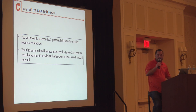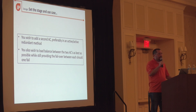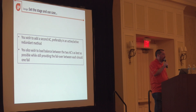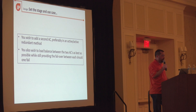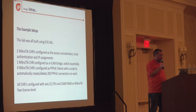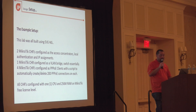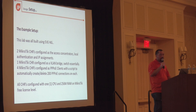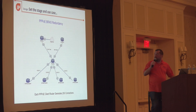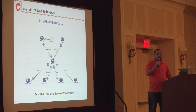This slide sets the stage for the lab. We basically want to add a second access concentrator and try to balance the connections out as best as possible. I'm assuming it's all one layer 2 domain at the moment — I'm not going to go into MPLS, VPLS, or EIP. We have two MikroTik CHRs configured as ACs doing local authentication and IP assignments, connected to a switch, and four clients. We'll ramp up 200 connections on each to simulate load balancing.